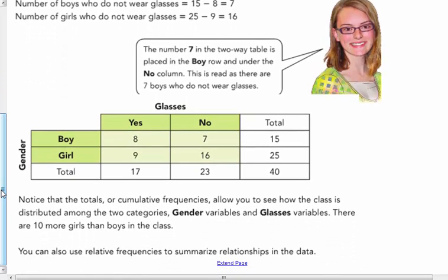Here's a two-way table being delineated by boy and girl going in the rows. The rows are gender, boy and girl, labeled on the left side. The columns are wearing glasses, yes, or not wearing glasses, no. There's a total of 15 boys and 25 girls. Altogether there were 40 students in this survey. Notice that the totals or cumulative frequencies allow you to see how the class is distributed among the two categories, gender and glasses.